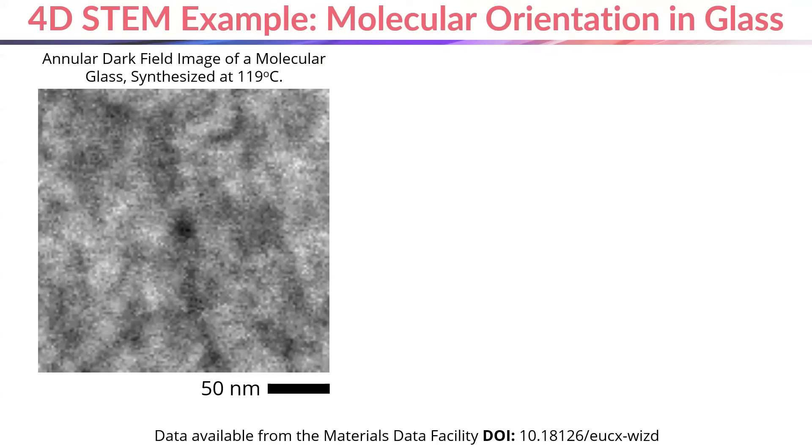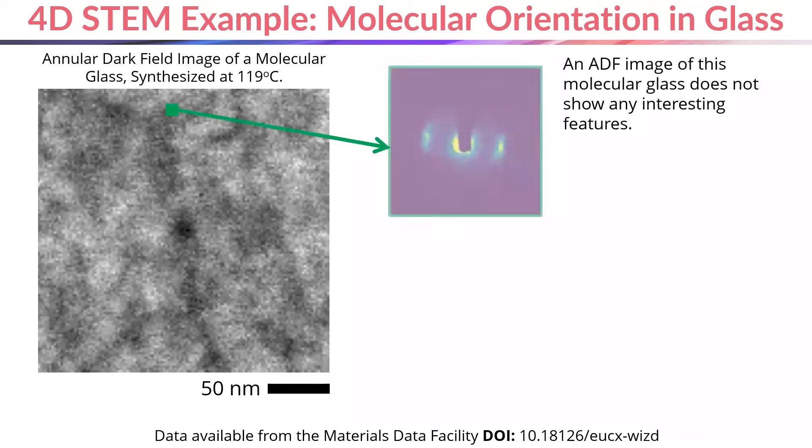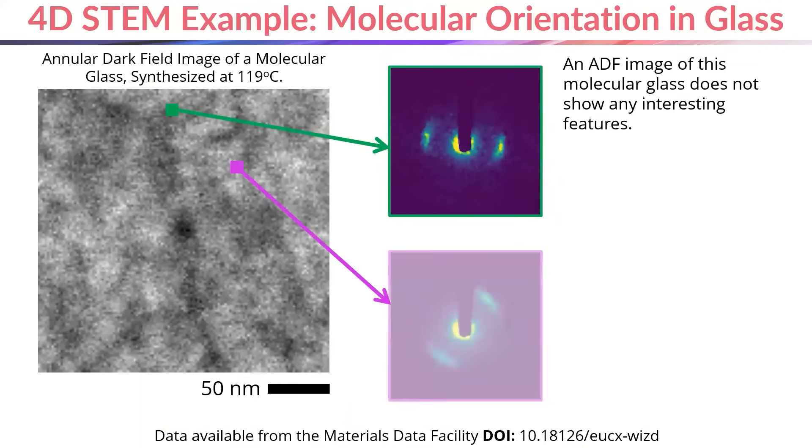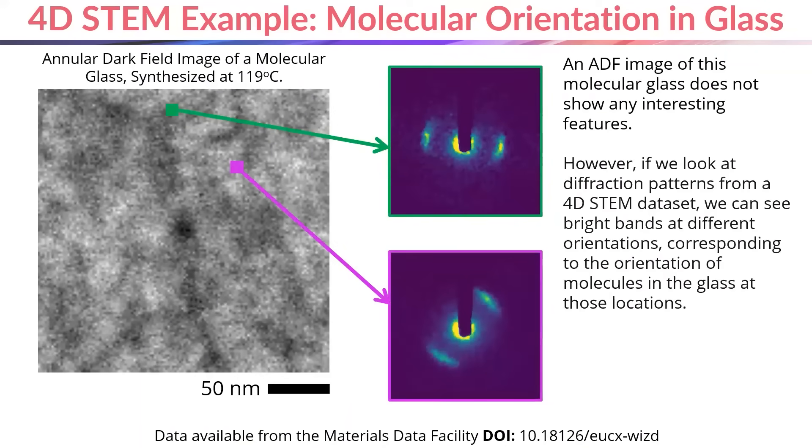However, when we use 4D STEM and we look at diffraction patterns acquired from different areas of this specimen, we can see bright bands in different areas of the diffraction pattern, which relate to the orientations of clusters and molecules in the molecular glass.